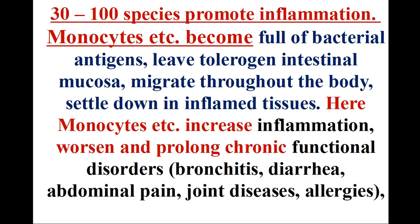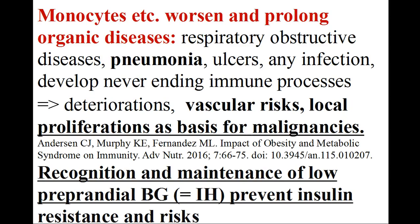From 30 to 100 bacterial species promote inflammation in each alimentary canal. Nutrient excess increases the number of immunogenic bacteria. Monocytes, LDL, etc. become full of bacterial antigens, leave the tolerogenic intestinal mucosa, migrate throughout the body, and settle down in inflamed tissues. Here, monocytes, LDL, etc. increase inflammation, worsen and prolong chronic functional disorders: bronchitis, diarrhea, abdominal pain, joint diseases, allergies, etc.